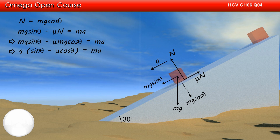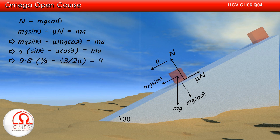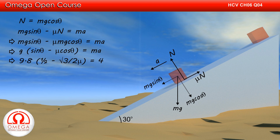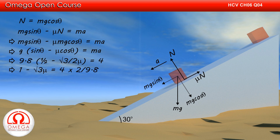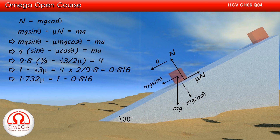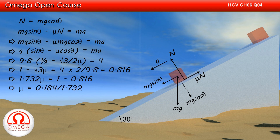Dividing both sides by m, we get g into (sin theta minus mu cos theta) is equal to a. Putting the values, we get 9.8 into (1/2 minus (√3/2) times mu) is equal to 4, or 1 minus √3 mu is equal to 4 times 2 divided by 9.8, which is 0.816. This implies 1.732 mu is equal to 1 minus 0.816, or mu is equal to 0.184 divided by 1.732, which equals 0.106.